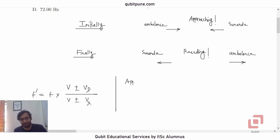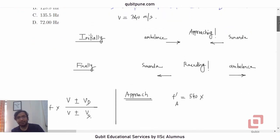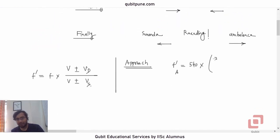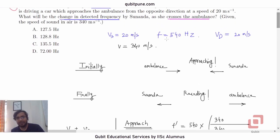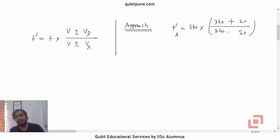Let us first calculate the approach frequency — the frequency detected by Sunanda when she is approaching the ambulance. Let us call it f-prime-A. It will be 540 × (340 + 20) / (340 − 20). Since both the observer and the source are moving toward each other, we use a plus sign in the numerator and a negative sign in the denominator, giving a detected frequency greater than 540 Hz.